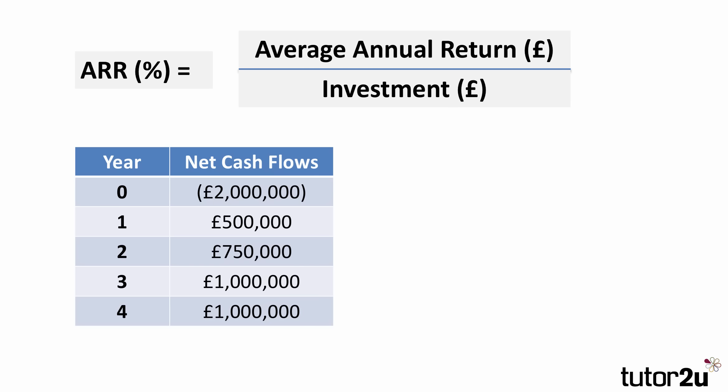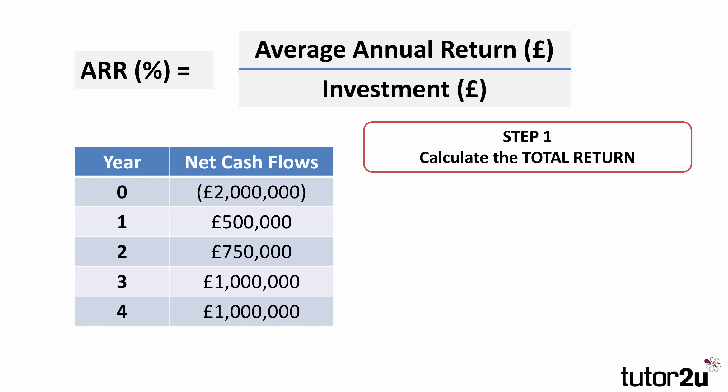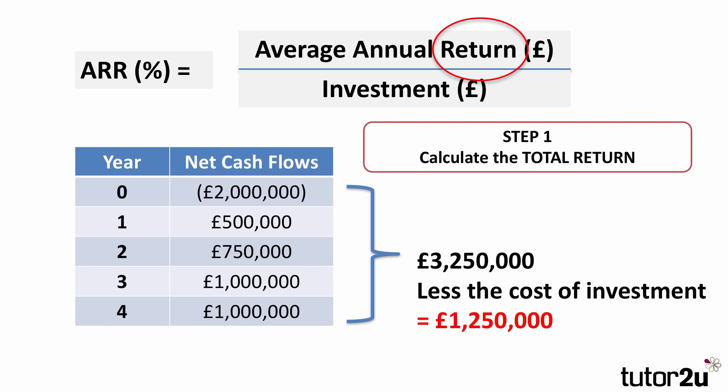There's the formula and there are the numbers in the table. Three steps to calculating ARR. The first step is to work out the total return of the project — we add together the net cash flows, but most importantly we need to remember to deduct the investment. Adding together the four years of positive net cash flow: £500,000 in year one, £750,000 in year two, and £1 million in each of years three and four — that comes to £3,250,000.